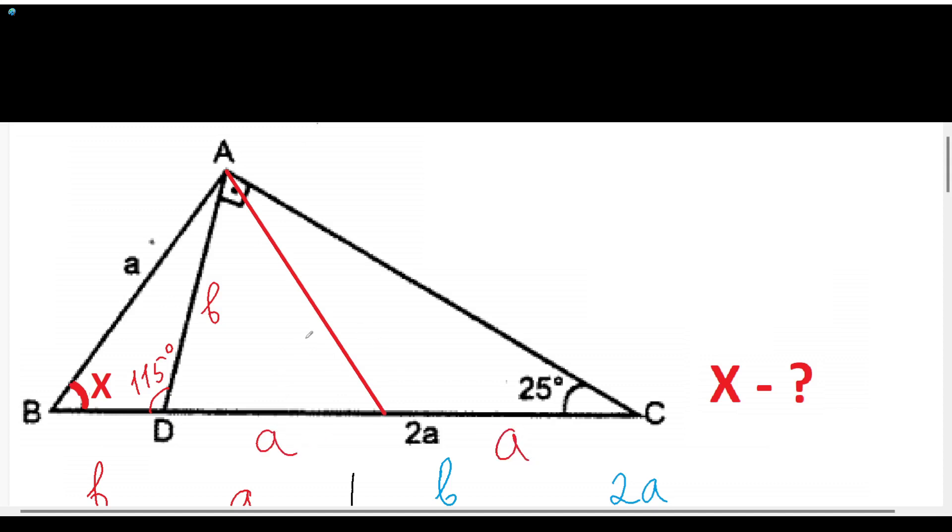So here if we will think that this is median, this side will be A and this will also be A. And from the ADC triangle, as it is a right angle triangle, the median will be equal to half of the hypotenuse.